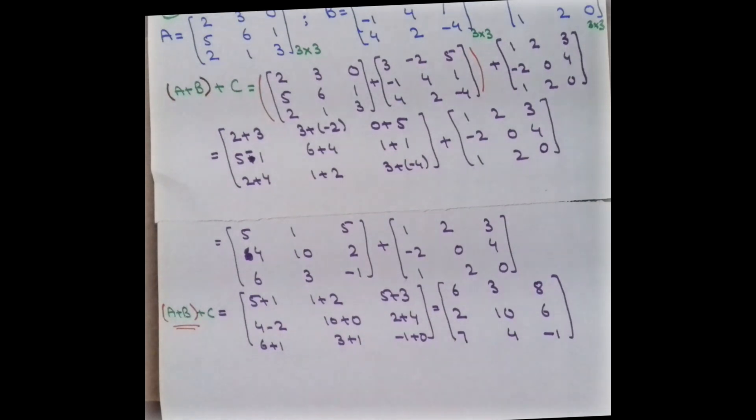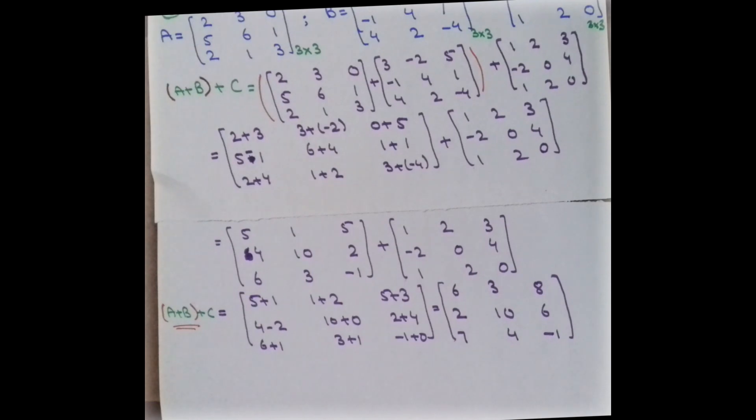In summary, the addition of two matrices is only possible when the order of both matrices is the same; otherwise addition is not possible. Similarly, subtraction of two matrices works the same way — two matrices can be subtracted only if they have the same order.